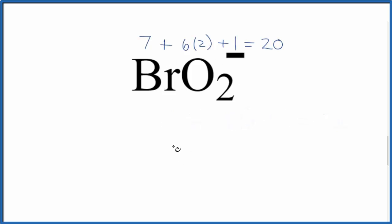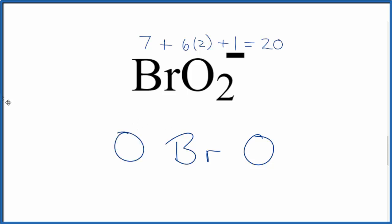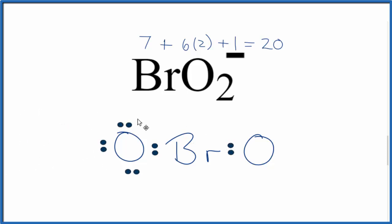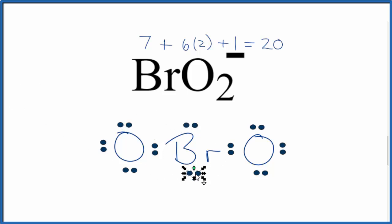We'll put bromine in the center — that's the least electronegative — and then oxygens on each side. We'll put electrons between atoms to form the chemical bonds, and then go around and complete the octets on the oxygen atoms. At this point we've used 16 valence electrons. Let's complete the octet on the bromine: 16, 18, and 20. So we've used all 20 valence electrons.